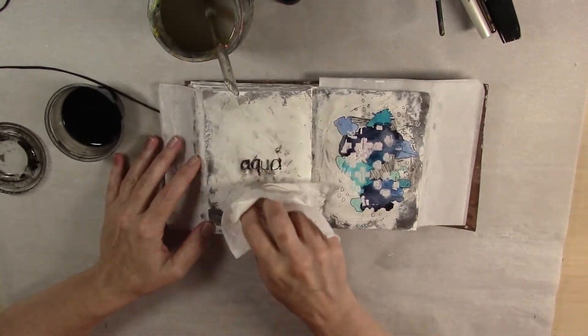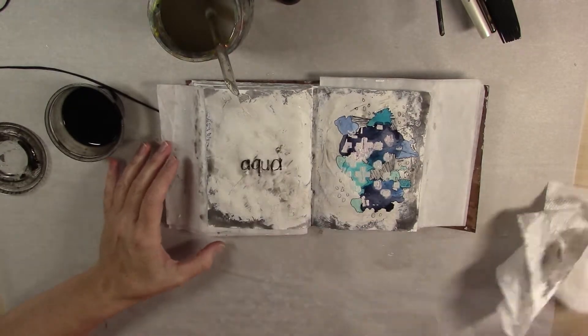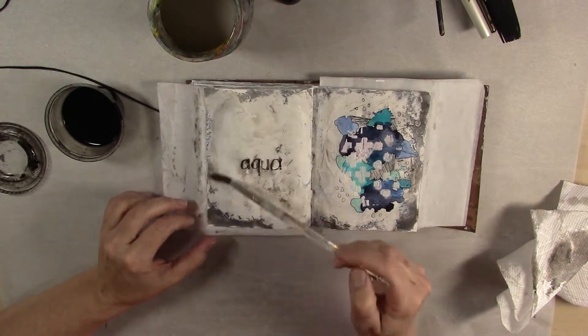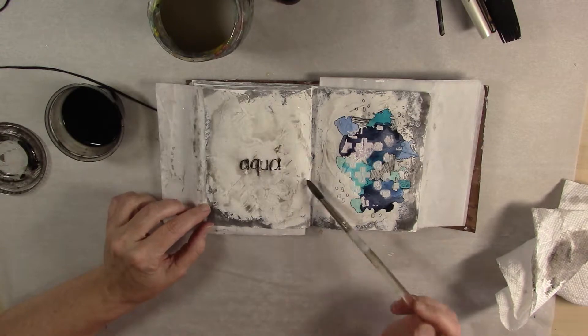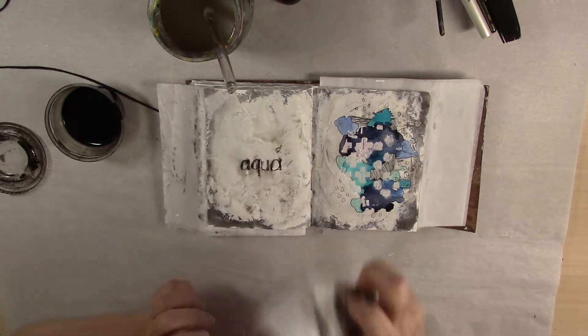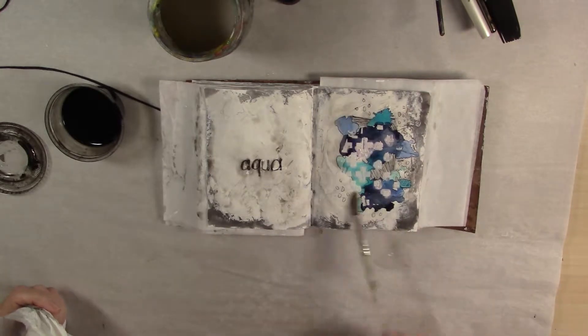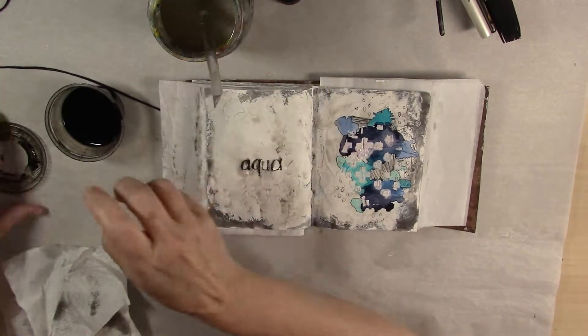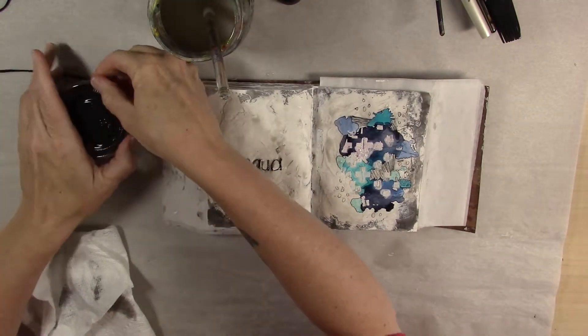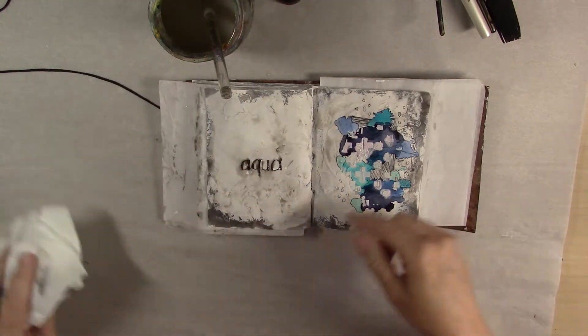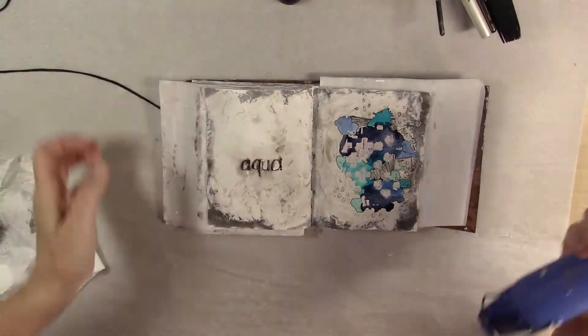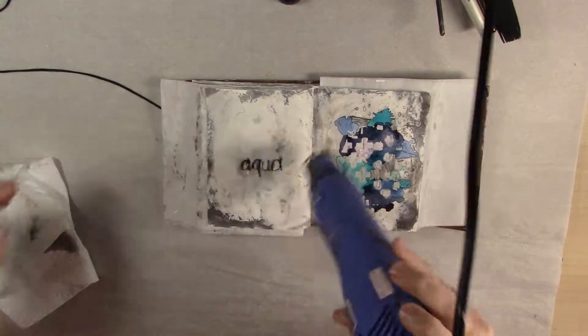And again, you can see all of those wonderful details from the joint compound. Just blot away the excess where you want it. And I like to go over with some water because then when it dries, it creates some really cool effects on the page too. So I'll go ahead and close this up here so I don't spill it. And I'm going to go ahead and dry this with a heat gun. I'll be right back.